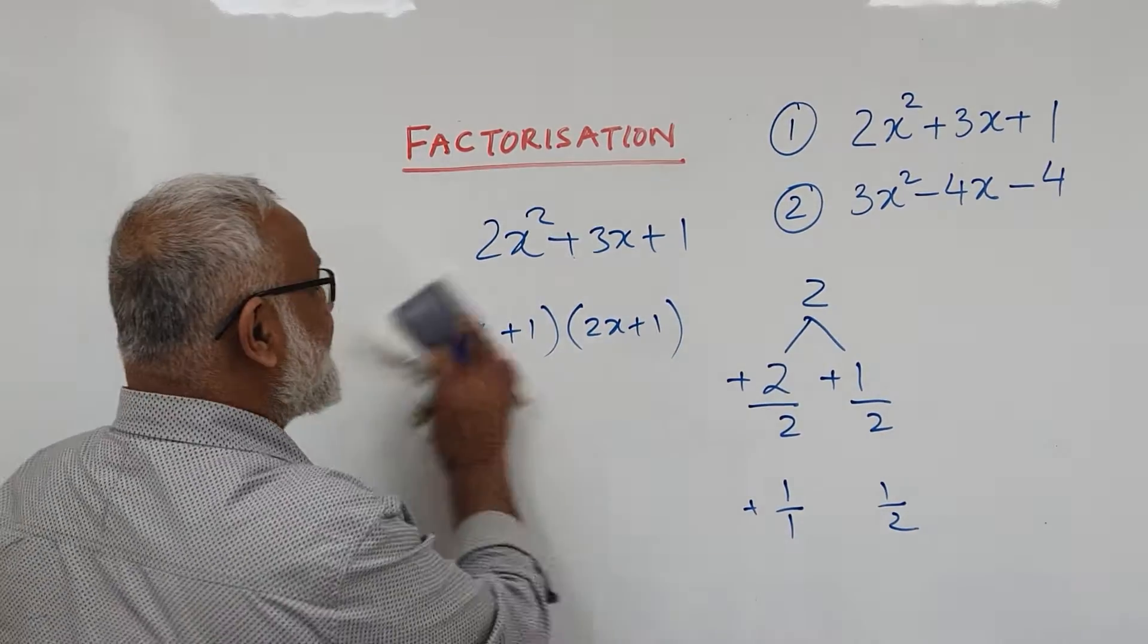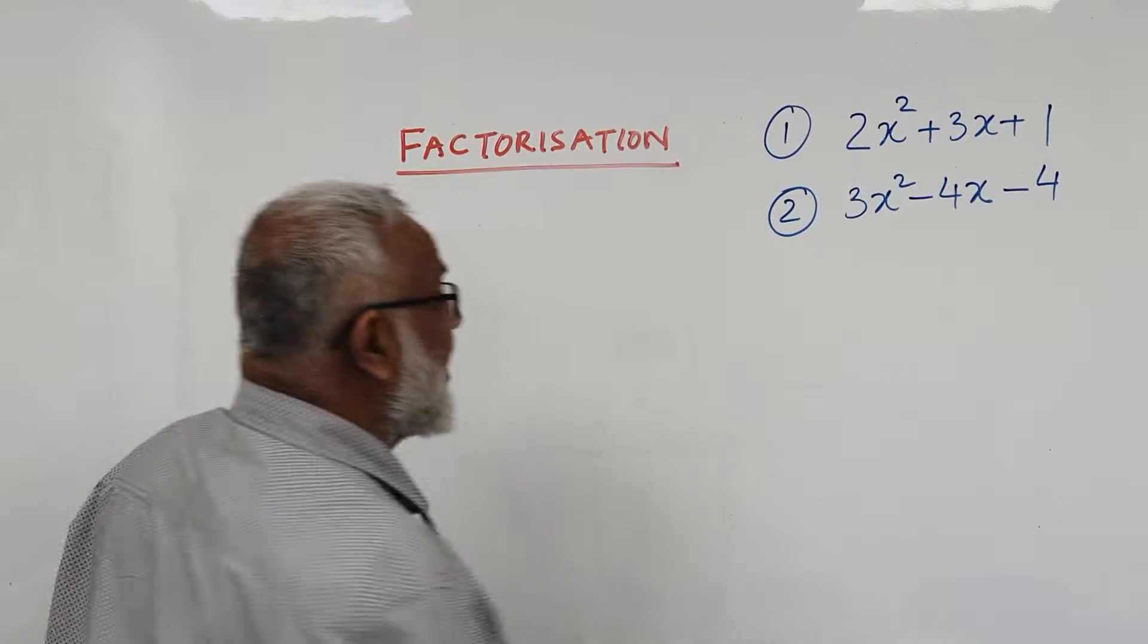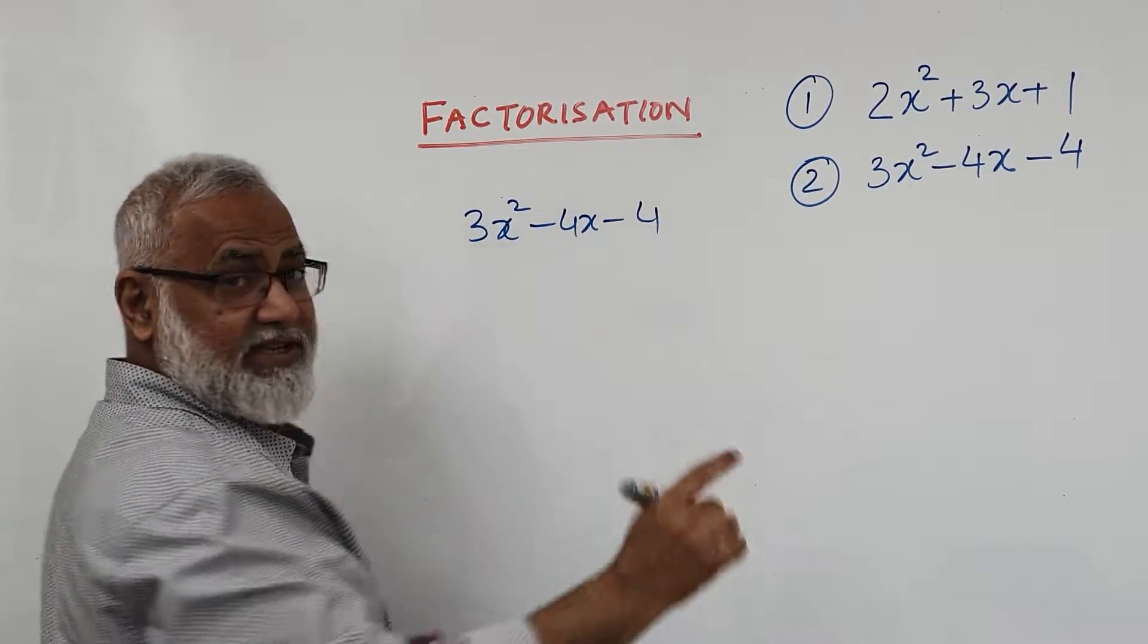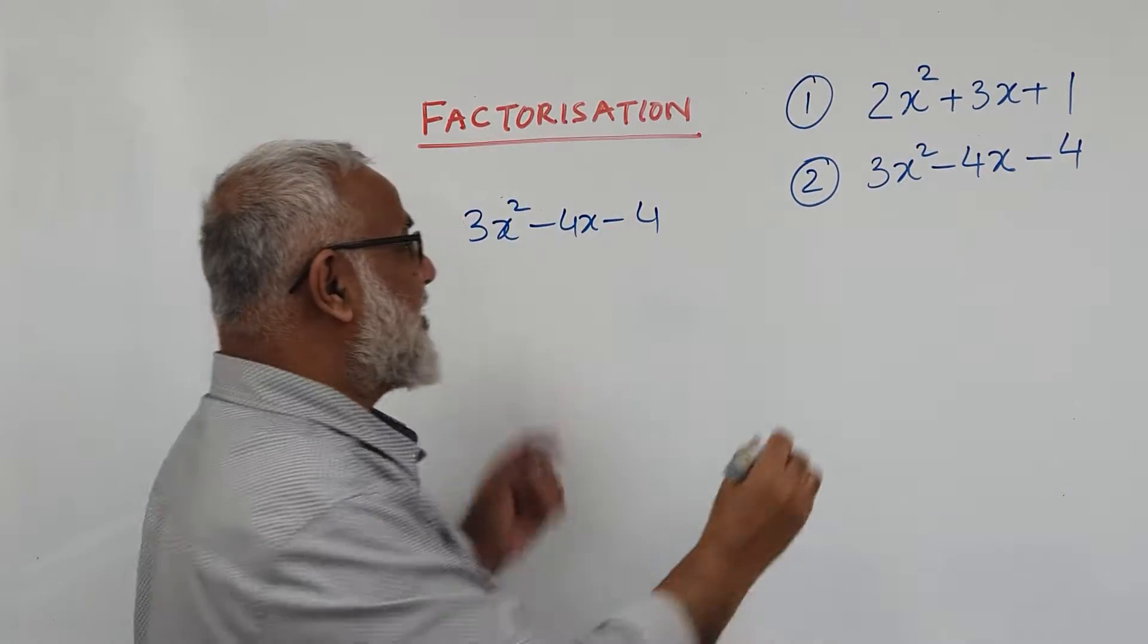I'm giving you another example. So 3x squared minus 4x minus 4. Step number 1: You times 4 by 3, 12.